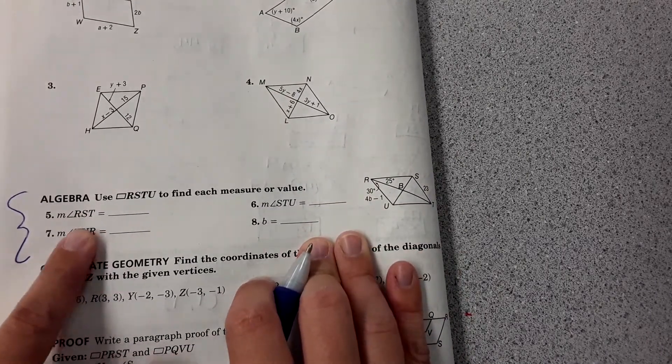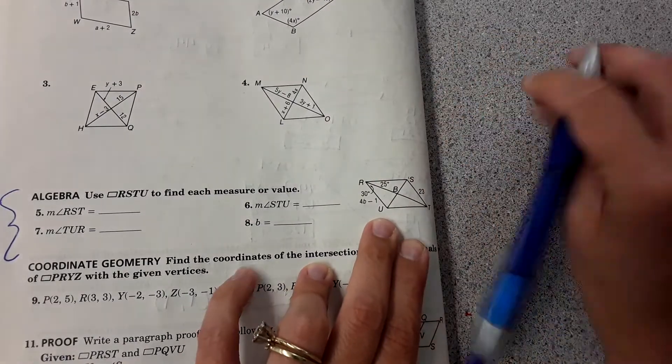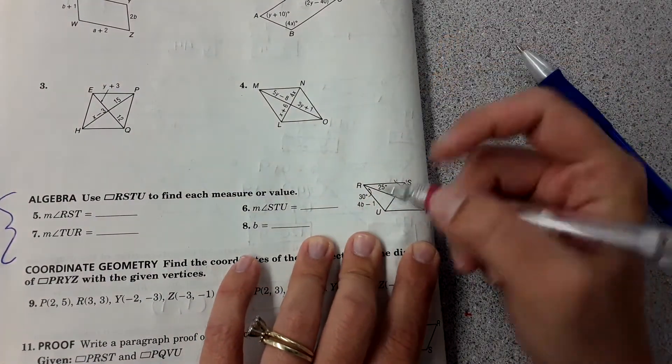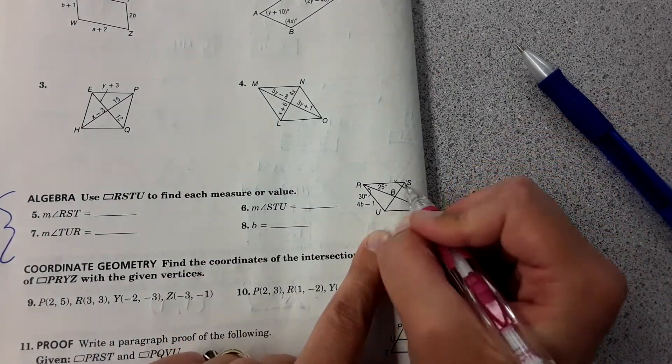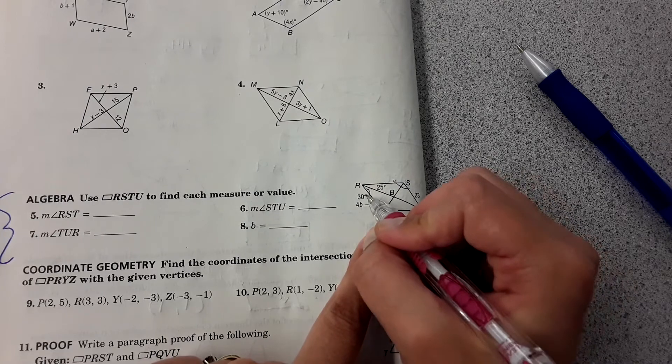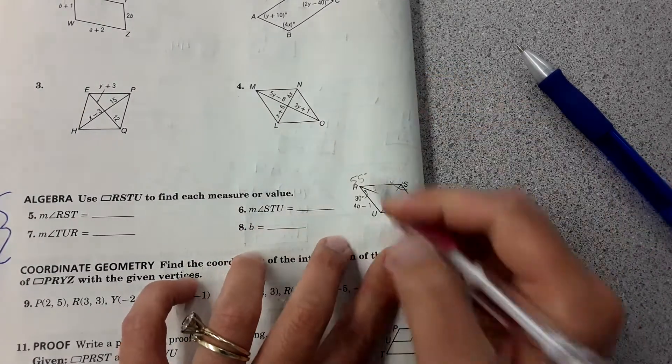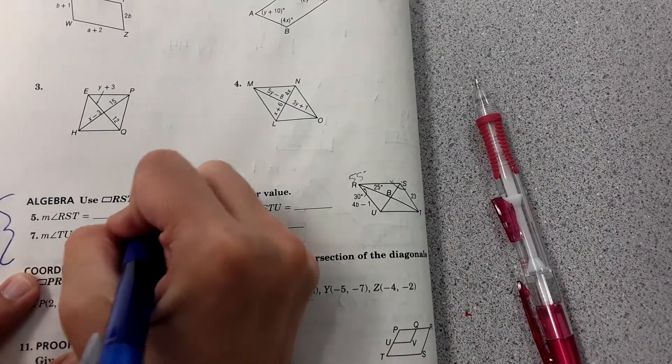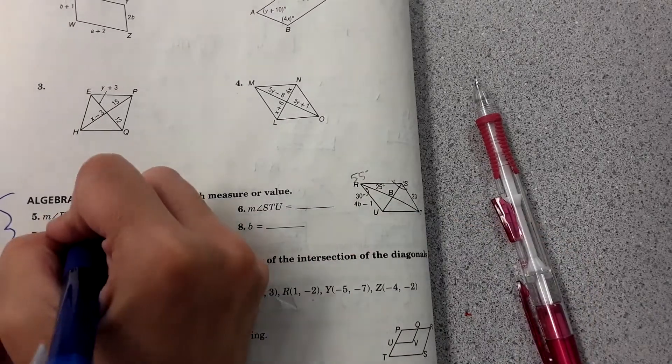So it says find the measure of RST. RST is this angle right here. It shows us a parallelogram. These two angles are supplementary, so 30 plus 25 is 55 degrees. This angle is 55, so I can do 180 minus 55 to get RST, which comes out to 125.